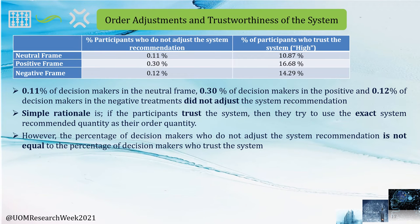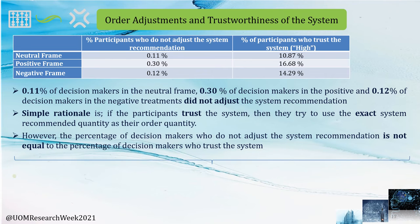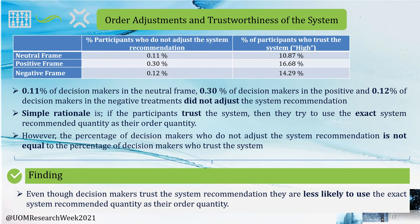However, decision makers in the positive treatment might consider system recommendation as the profit maximization quantity, whereas decision makers in the negative treatment might think of it as the cost minimization quantity, making them more likely to trust the system. According to the table, 0.11% of decision makers in the neutral frame, 0.30% in the positive frame, and 0.12% in the negative frame did not adjust the system recommendation. This is interesting because if a participant trusts the system, one would expect them to use the exact system-recommended quantity. However, it is completely the opposite. Even though decision makers trust the system recommendation, they are less likely to use the exact system-recommended quantity, and thus use the system recommendation as a benchmark when adjusting order quantities.